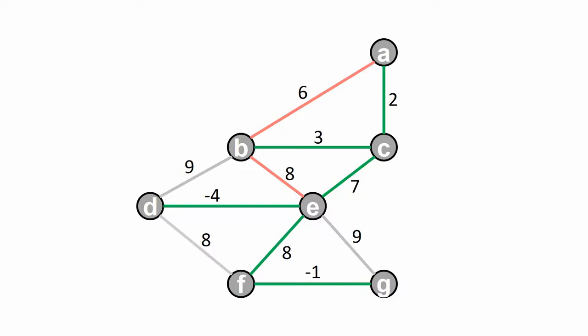Now we can't add any more edges without creating a cycle. That means that Kruskal's algorithm is now finished and has found this minimum spanning tree with a weight of 15.